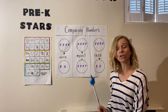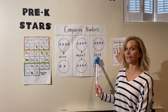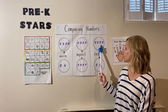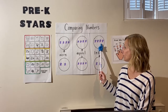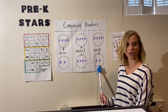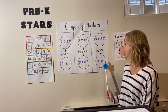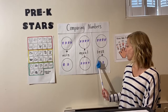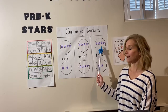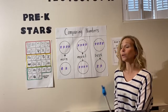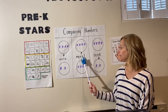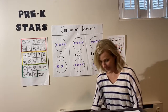And we're going to be using the word 'less.' If you look at this group, there are four stars. This group has two stars. So there are less stars in this group than in that group. So we're going to be using words like more, equal, and less.